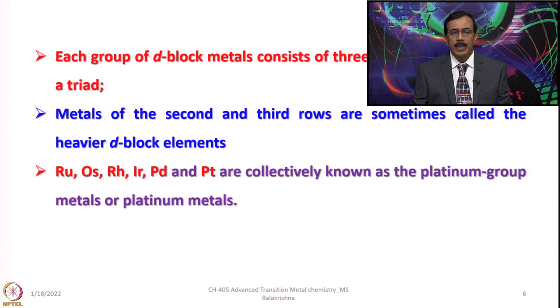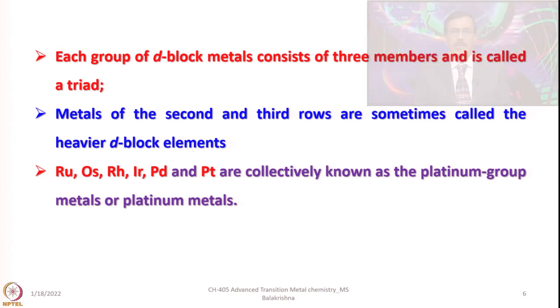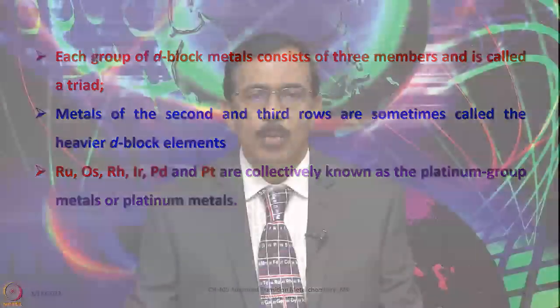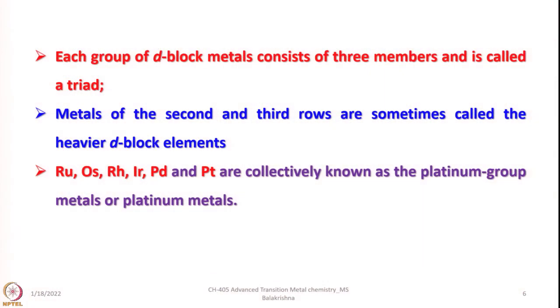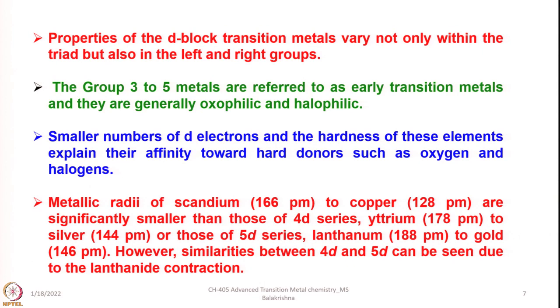The chemistry of 3D elements differs considerably from the 4D and 5D series, whereas 4D and 5D have a lot of resemblance and very similar properties. Ruthenium, osmium, rhodium, iridium, palladium, and platinum are collectively known as platinum group metals. When you see a book stating 'platinum metals,' you should not confuse it with only platinum — it refers to these 6 elements together. Properties of the D block transition metals vary not only within the triad but also across the left and right groups.